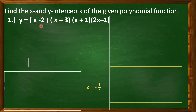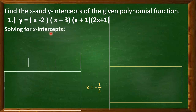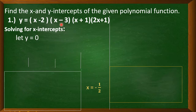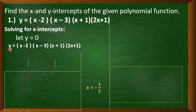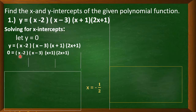Since it's in factored form, it's very easy to solve for the x-intercept. Solving for the x-intercepts, we have to let y equal 0. Copy first the given function, then substitute y with 0. So this y variable becomes 0 and we now have a polynomial equation. To solve a polynomial equation, we have to equate each factor with 0 and solve for x.